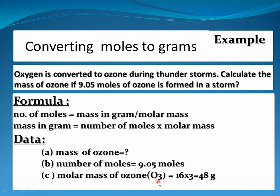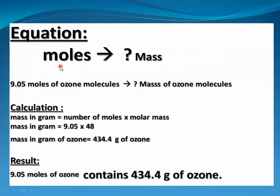Now the calculation. Mass in grams = number of moles × molar mass = 9.05 × 48 = 434.4 grams of ozone. So we can say 9.05 moles of ozone has a mass of 434.4 grams.